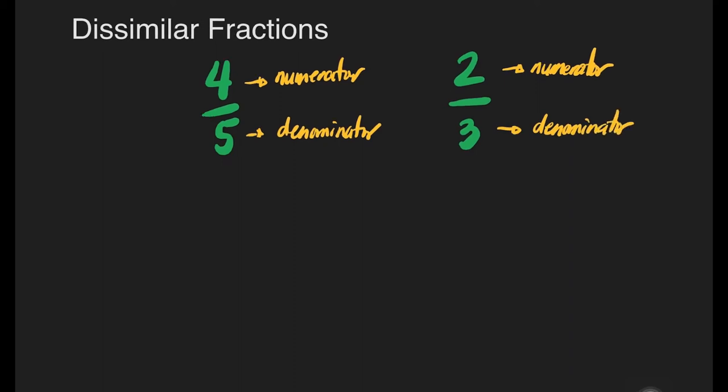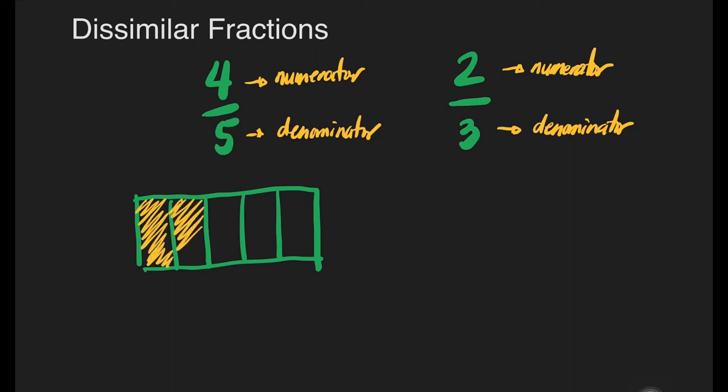Let us draw or visualize by having a diagram for these two fractions so that we can say that they are really dissimilar fractions. So let's have this 4 fifths divided into 5 equal parts so we will be shading, we will shade 4 parts. That is our 4 fifths.